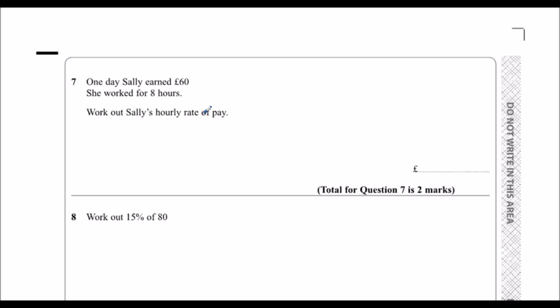So it's pay per hour. And what that means is pay divide by the number of hours. So we need to do 60 divide by eight.